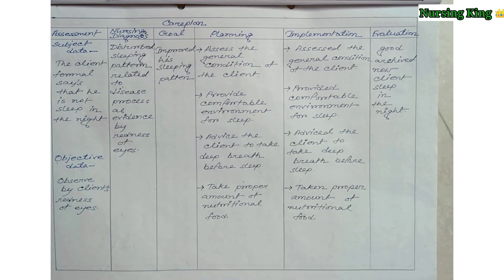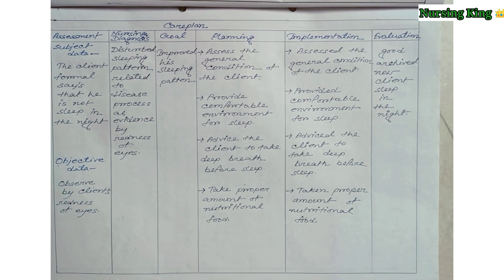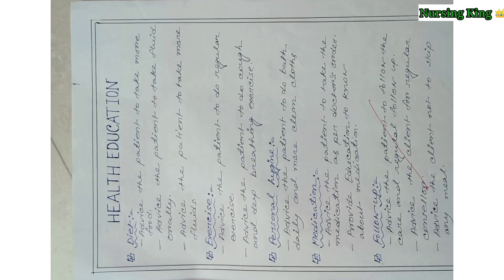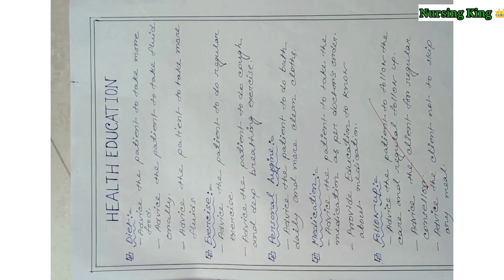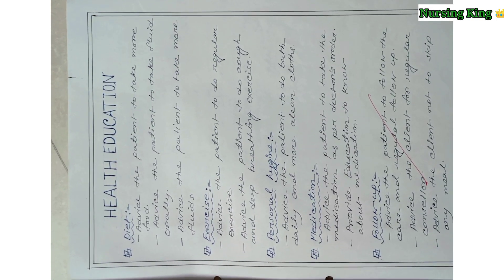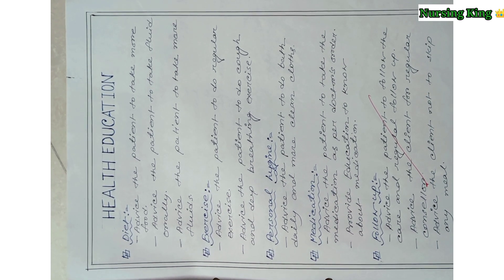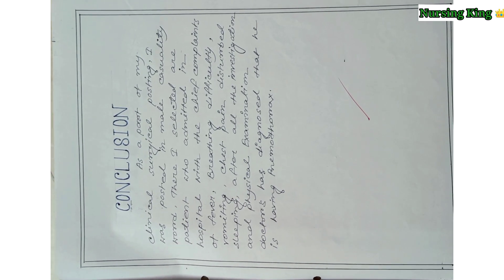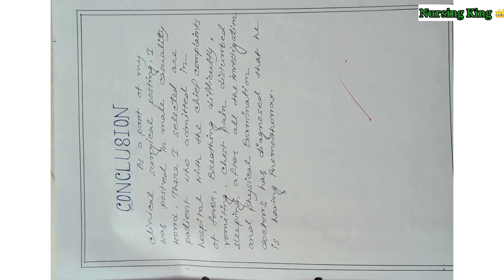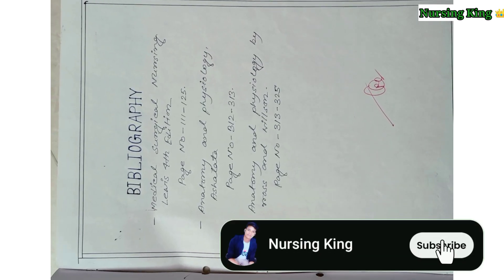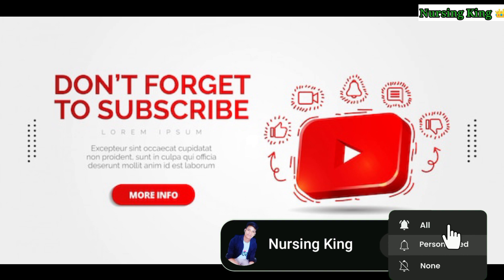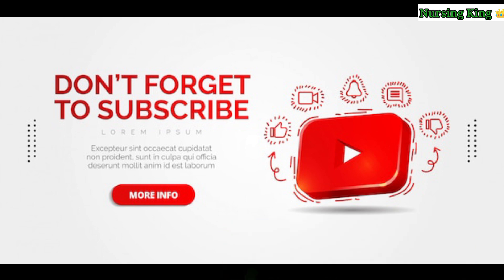After the nursing care plan, you have to mention patient health education — including diet, exercise, personal hygiene, medication, and follow-up care. In the conclusion, you have to write the conclusion and bibliography. I hope this video is helpful for you. Please like and subscribe to my channel, Nursing King.